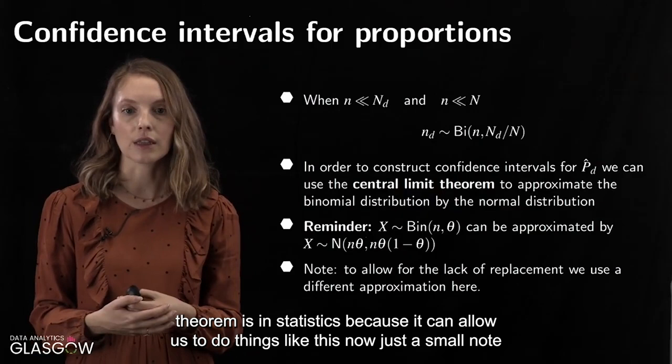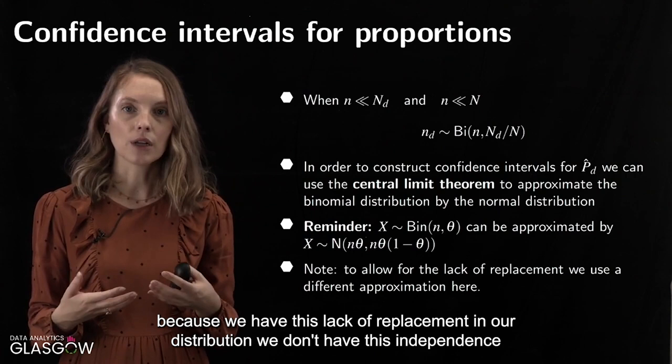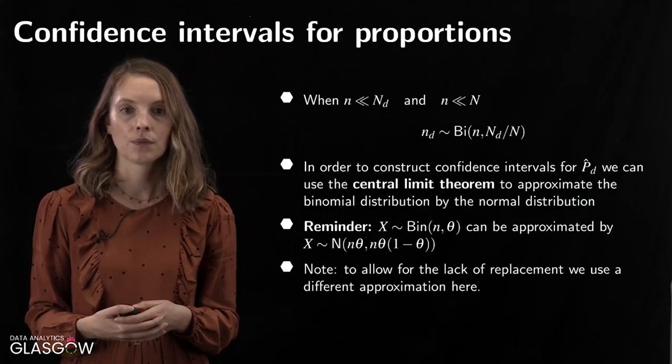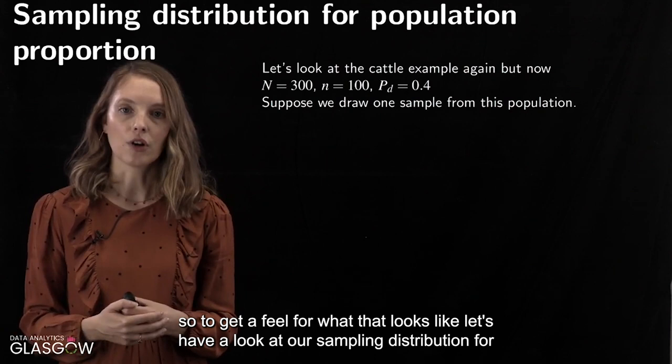Because we have lack of replacement and therefore lack of independence, we won't use this exact approximation — we'll use one that's slightly different — but you don't need to worry about those details for this course. To get a feel for what this looks like, let's examine the sampling distribution for our population proportion.